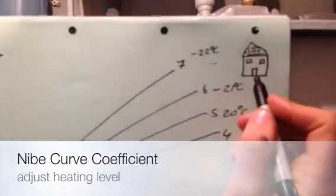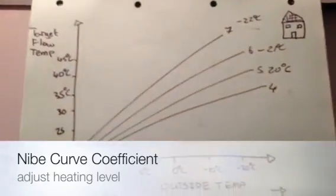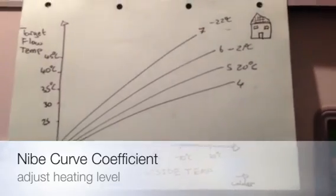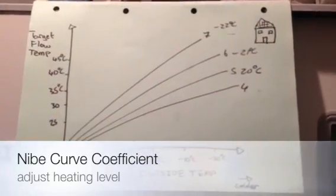But this depends greatly on the insulation and the type of house you have. If you have a lot of glass, you'll have a lot of heat loss, so you'll need a higher curve. If you have a poorly insulated house, you'll need a higher curve. If you have a well-insulated house, you'll need a lower curve.